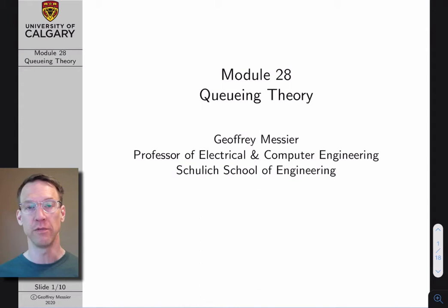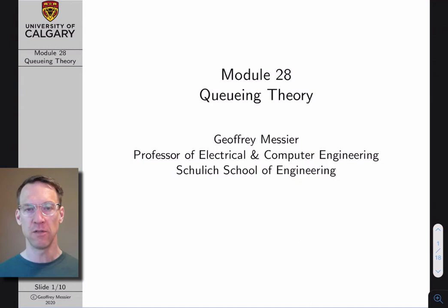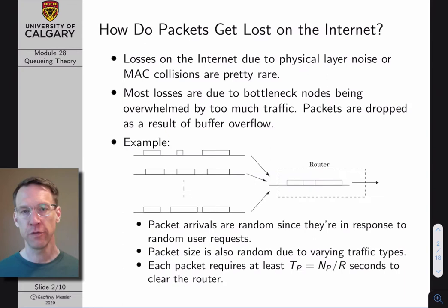Hello, my name is Jeff Messier. I'm a professor in Electrical and Computer Engineering in the Schulich School of Engineering. This is module 28 in my Computer Networks lecture series where I talk about queuing theory — a very rich branch of analysis we will use to analyze the probability that a router or switch in a network is going to drop a packet due to buffer overflow. This analysis will also give us tools to figure out how big our router buffers need to be in order to achieve a certain level of reliability in terms of the probability of dropped packets.